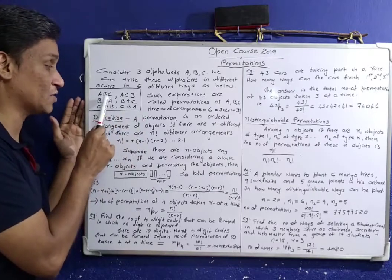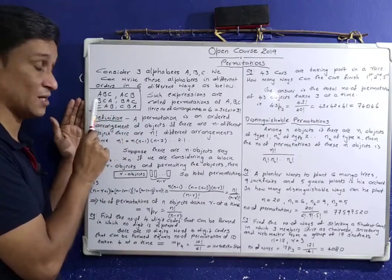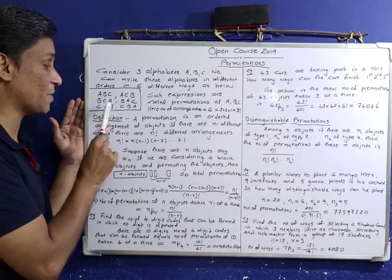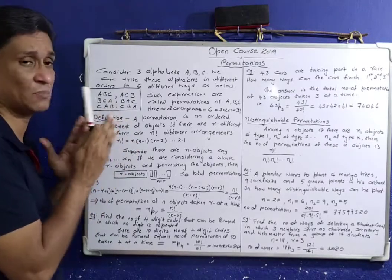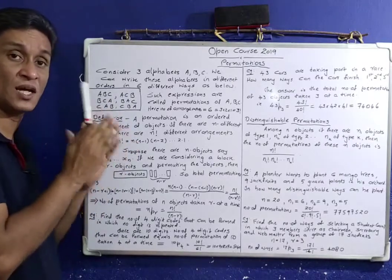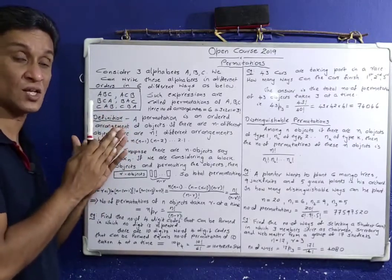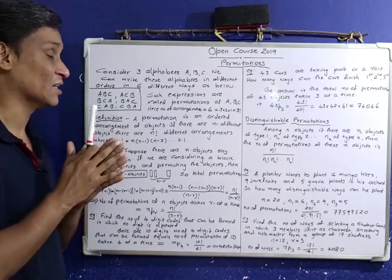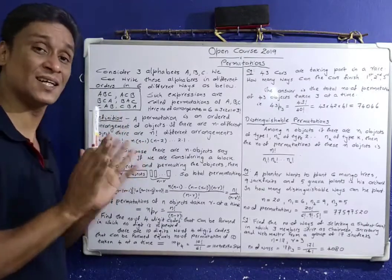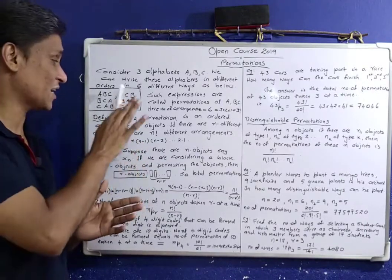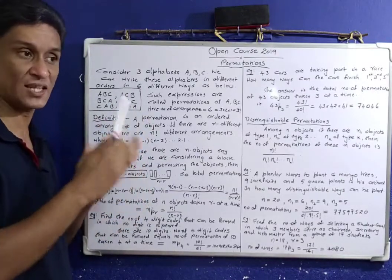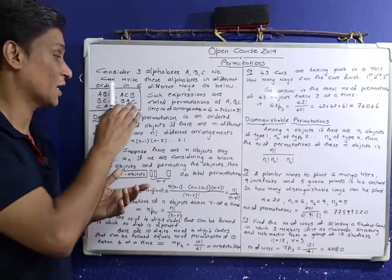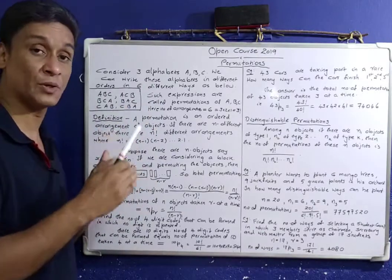A, B, C. You should write this using the idea. This is the arrangement — we say this is the permutation.